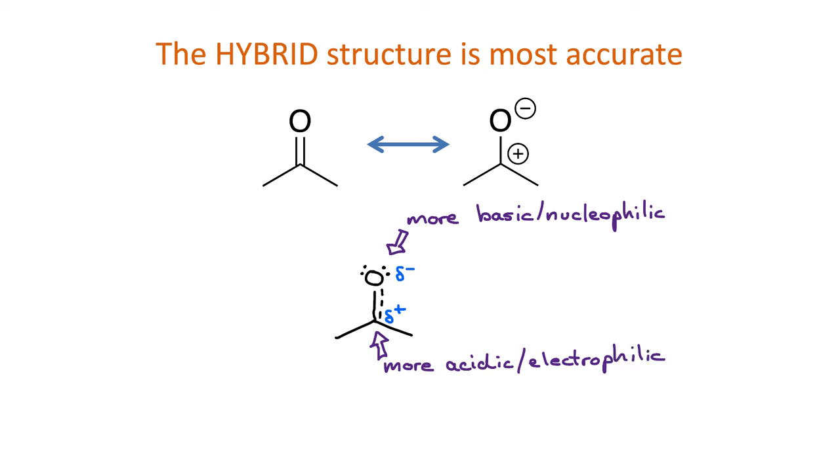Fifth, enclose the hybrid in square brackets. And sixth, place the overall structure's charge outside the brackets. In this case, the overall charge is zero, so we don't put anything here.